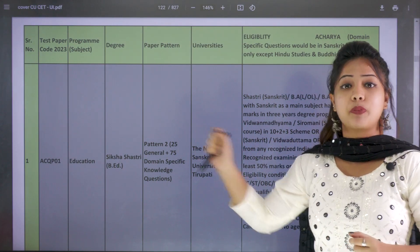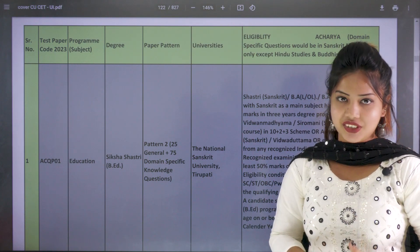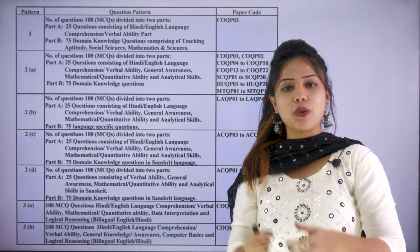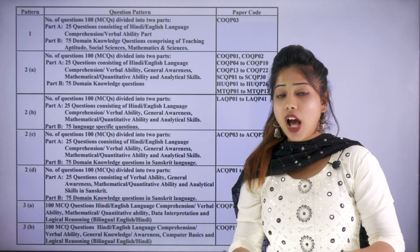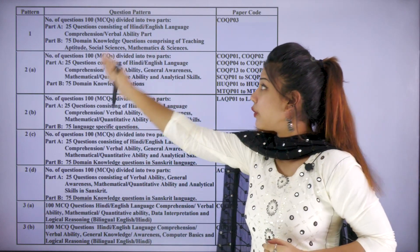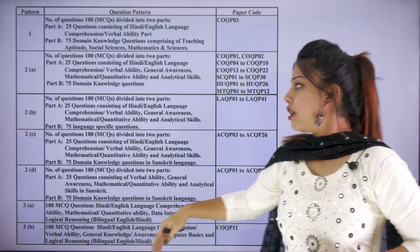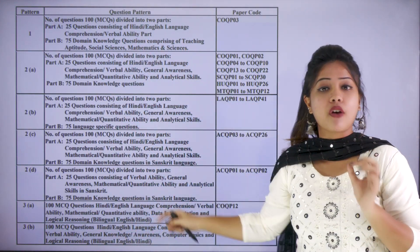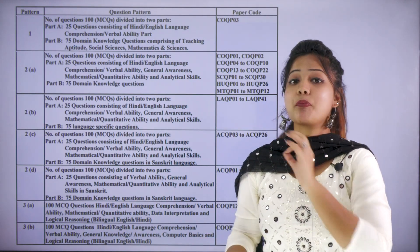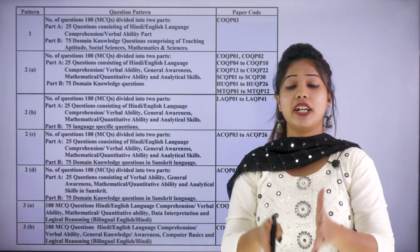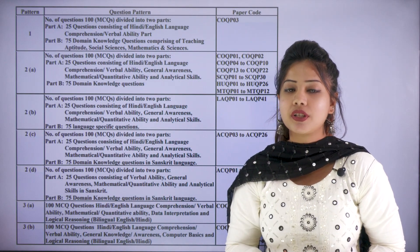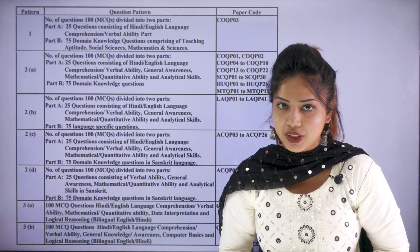Just make a note of this paper code so that it will be easy at the time of registration. Now you can see this is the exam pattern of CUET PG. After noting down your paper code, you would get conceptual clarity of which pattern you come under. The total number of questions is 100, divided into Part A and Part B. Part A consists of 25 MCQs and Part B comprises 75 MCQs based on your domain knowledge questions.